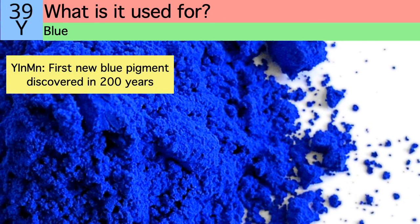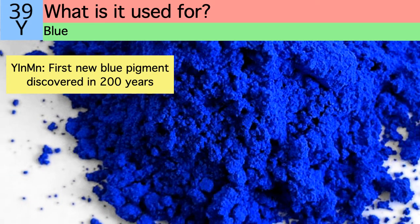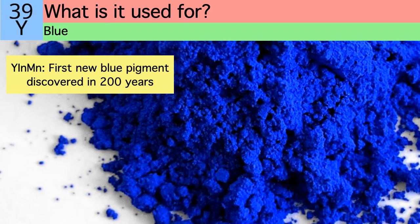A team from Oregon State University discovered that yttrium, combined with indium and manganese, can form an intensely blue pigment. This was the first of its kind discovered in 200 years.